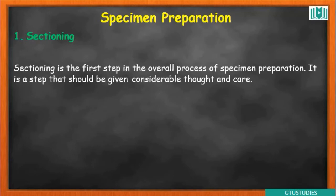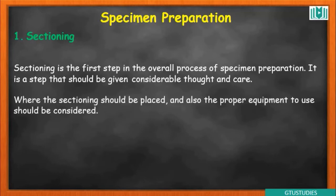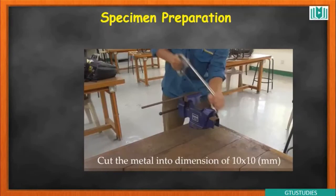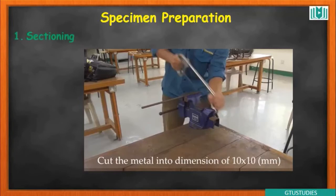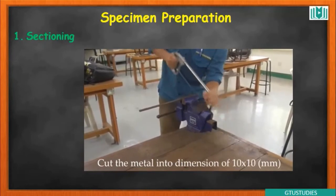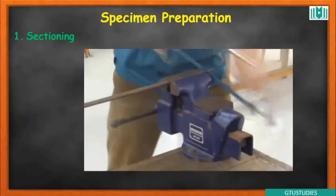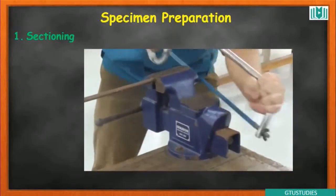Sectioning is the first step in the overall process of specimen preparation. It is a step that should be given considerable thought and care. Where the sectioning should be placed, and the proper equipment to use, should be considered. You can see the sectioning process — the sample is cut into a 10x10 shape and size.